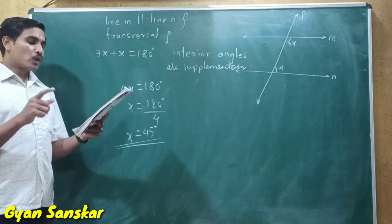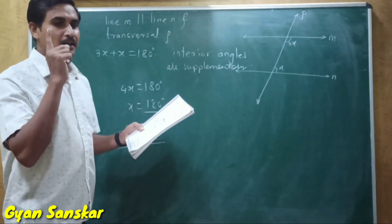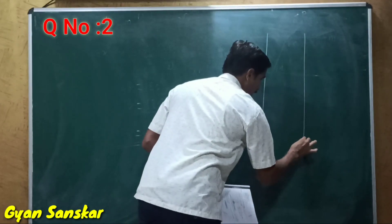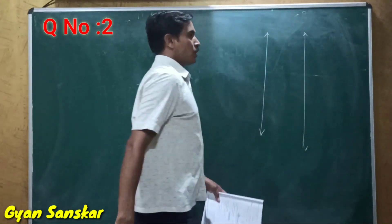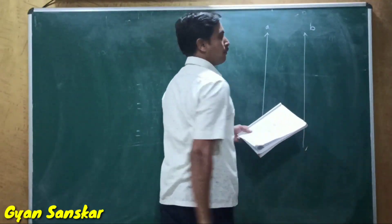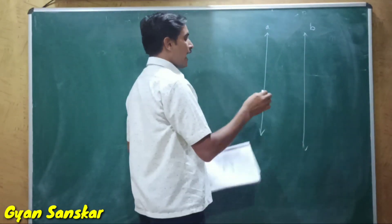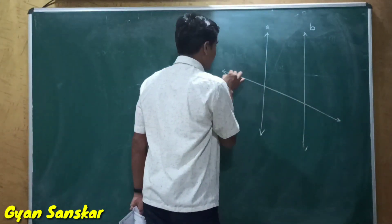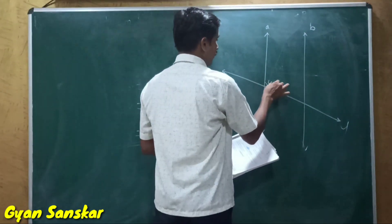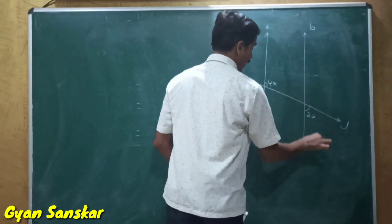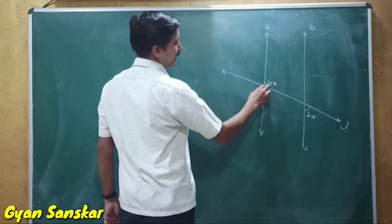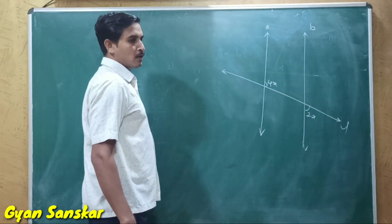Now here two vertical lines are parallel to each other. In the first question two lines were horizontally parallel, but here line A and line B are both vertically parallel. They have a transversal whose name is line yam, which is intersecting both the lines. The angles given are 4x and 2x, and we have to find the value of x.